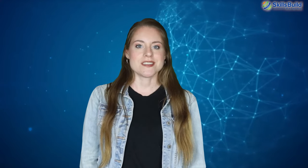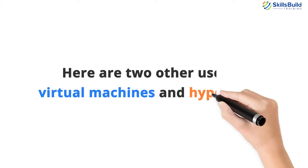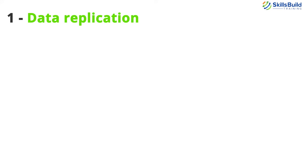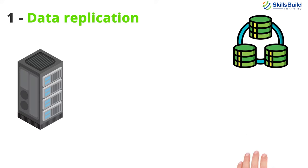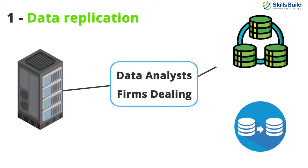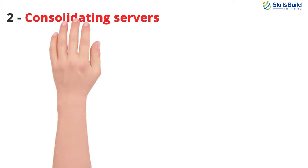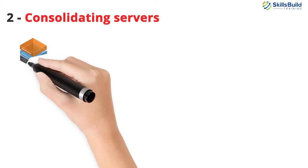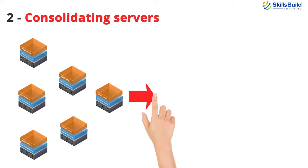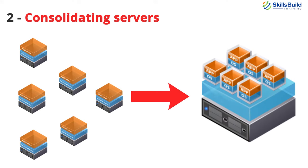This use of virtual machines and hypervisors is called desktop virtualization, but it does not only stop at testing new software. People also use virtual machines to operate old software that is no longer supported by current operating systems. Here are two other uses of virtual machines and hypervisors. One, data replication: hypervisors are used for data cloning and replication by data analysts and firms dealing with organizing and collecting data. Two, consolidating servers: hypervisors enable server consolidation due to their downloadable enhancements, allowing servers — including those based on different operating systems — to be consolidated.